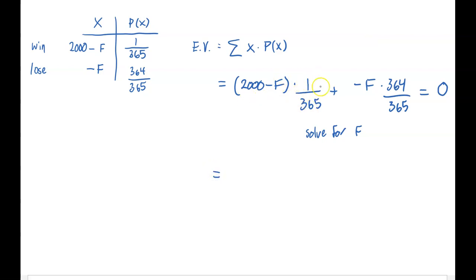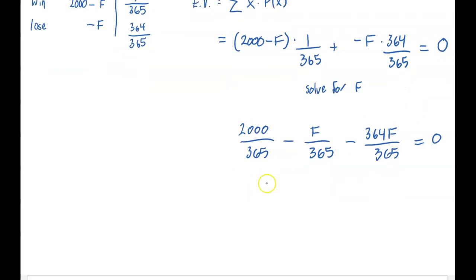First, I'm gonna distribute the 1 in 365 chance of winning. So I'd have 2000 times 1 over 365, which is 2000 over 365, minus F over 365. And then negative F times 364 would be negative 364F out of 365. And then if I combine all these fractions into one, I'm gonna have (2000 minus 365F) over 365, because negative F and negative 364F is negative 365F, equals zero.